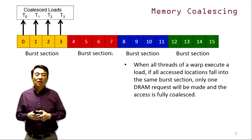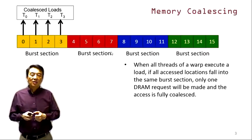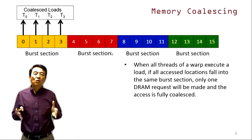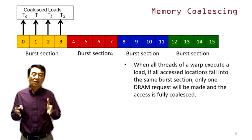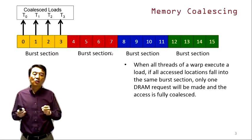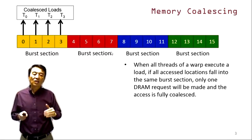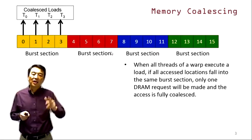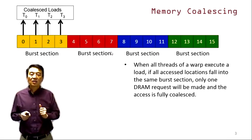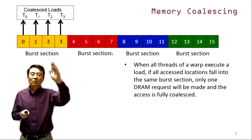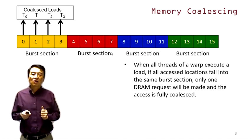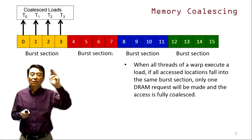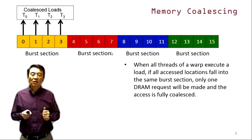This leads to the concept of memory coalescing. Whenever all threads of a warp execute a load, if all the access locations fall into the same burst section, only one DRAM request will be made and the access is fully coalesced. Here we show a simple example of coalesced access for our toy example.